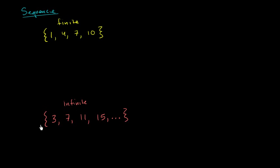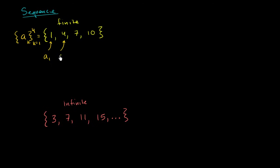Now, there's a bunch of different notations that seem fancy for denoting sequences, but this is all they refer to. I want to make us comfortable with how we can denote sequences and also how we can define them. We could say that this right over here is the sequence a sub k, for k going from 1 to 4. We can look at each of these as the terms in the sequence: this would be a sub 1, this would be a sub 2, a sub 3, and this right over here is a sub 4.